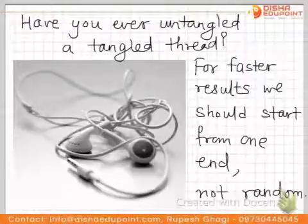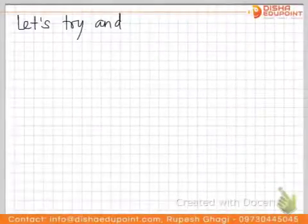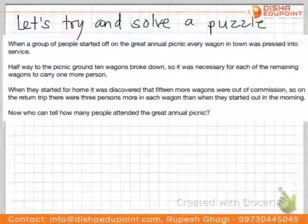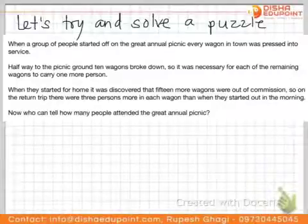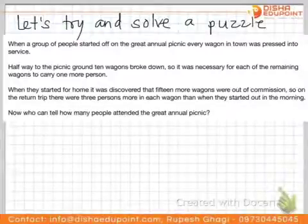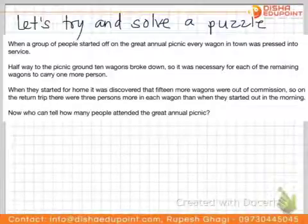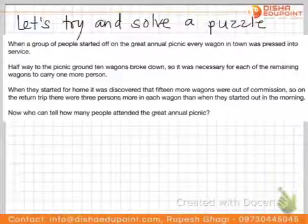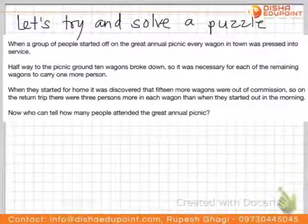To clarify this, let's try to solve a puzzle. When a group of people started off on a great annual picnic, every wagon in the town was pressed into service. Halfway to the picnic ground, 10 wagons broke down, so each of the remaining wagons had to carry one more person. When they started from home, 15 more wagons were out of commission. So on the return trip, there were three persons more in each wagon than when they started out in the morning. How many people attended the great annual picnic?